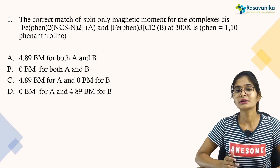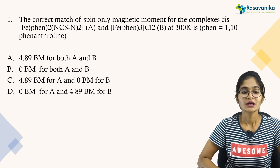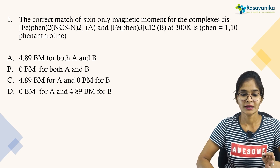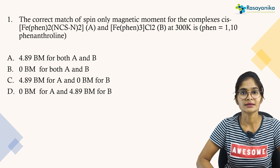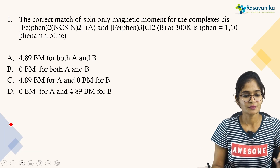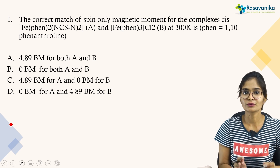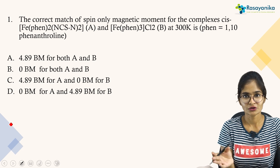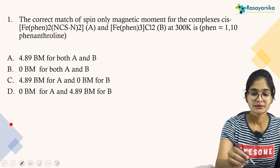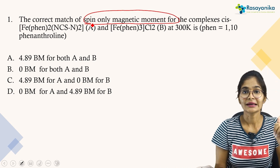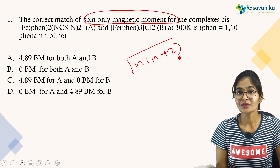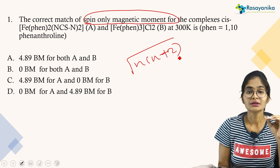The first question I have picked is with respect to spin-only magnetic moment calculation. The question asks for the correct match of spin-only magnetic moment for CIS phenanthroline complexes A and B, where complex A is Fe(phen)₂(NCS)₂ and complex B is Fe(phen)₃Cl₂. The options give values of 4.89 Bohr magneton and 0 Bohr magneton, varying whether both complexes have 0 or 4.89 Bohr magneton. We need to concentrate on complex A and complex B.